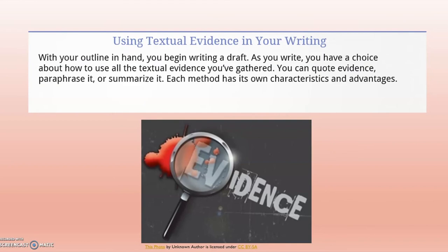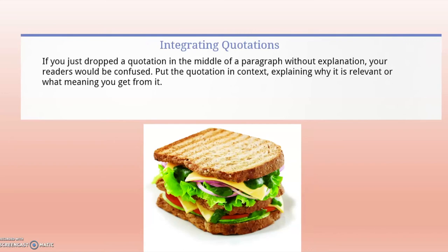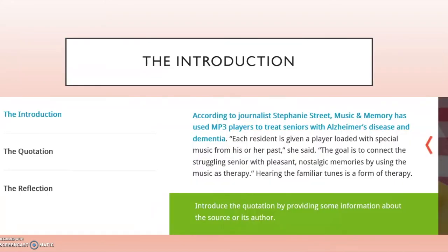There are advantages to each method of inserting textual evidence into your writing. Use a quotation when the author says something in an especially precise or original way. Use a paraphrase when you want to simplify difficult content or summarize it so you can refer to it briefly. Use a summary when you want to convey a great deal of information in a short space. We can think of integrating quotations similar to a sandwich. Let's take a look at an example for the introduction — what do you notice about how the quotation is introduced?